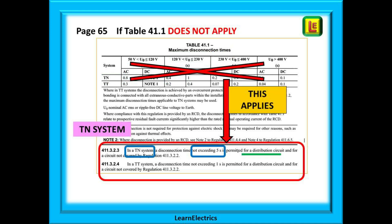If table 41.1 does not apply, what do we do? Just below the table are two important regulations and they do come up as exam questions. 411.3.2.3 tells us that if table 41.1 is not applicable or if it is a distribution system, then for a TN system we allow a disconnection time of 5 seconds.